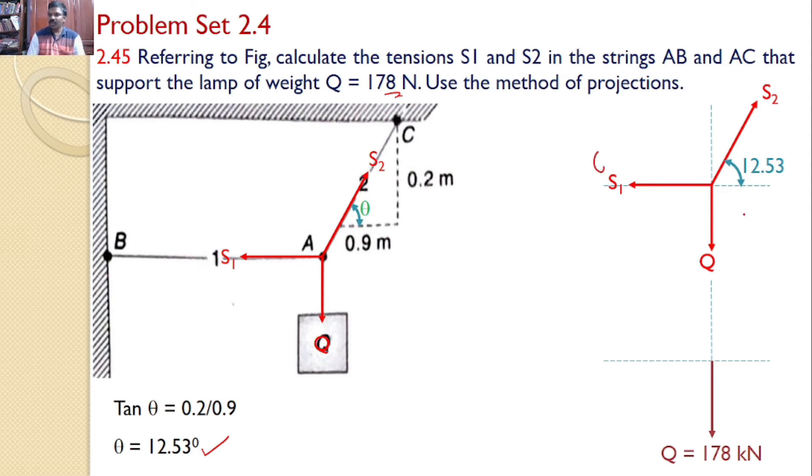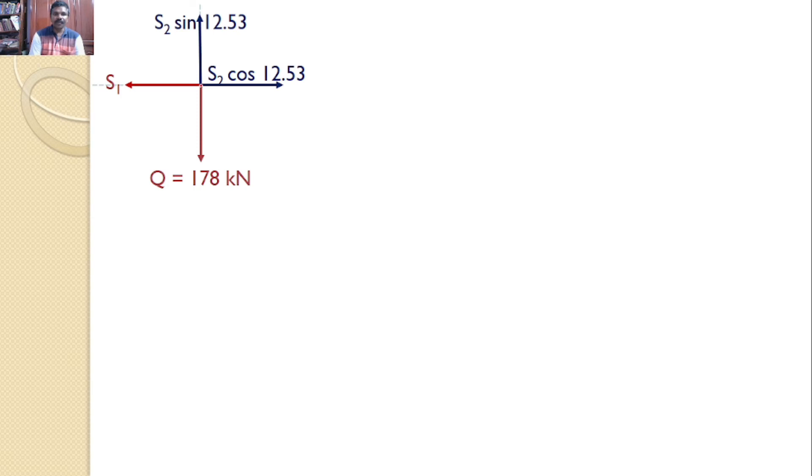Next force is S1 which acts along horizontal direction. So there is no vertical component of S1. Hence S1 also I transferred along x-axis. Next S2 force makes an angle 12.53 degrees. So this force you can resolve along x-axis and y-axis. The horizontal component or x-axis component is S2 cos 12.53 and vertical component is S2 sin 12.53. So these are the four forces after resolving all the forces along x-axis and y-axis.